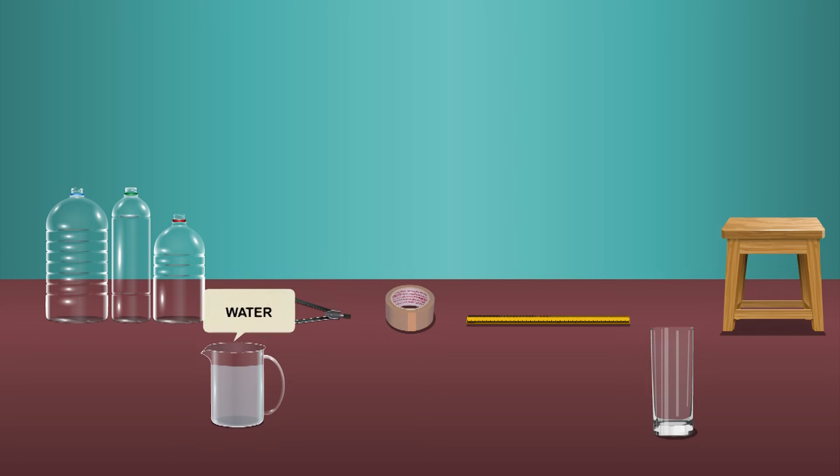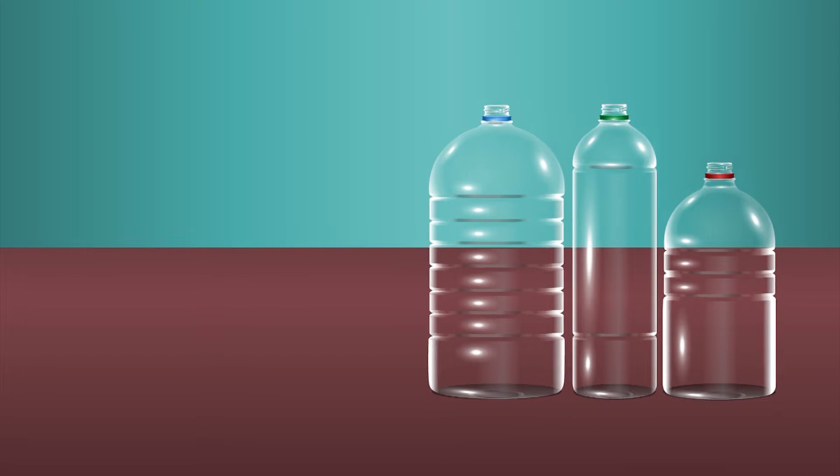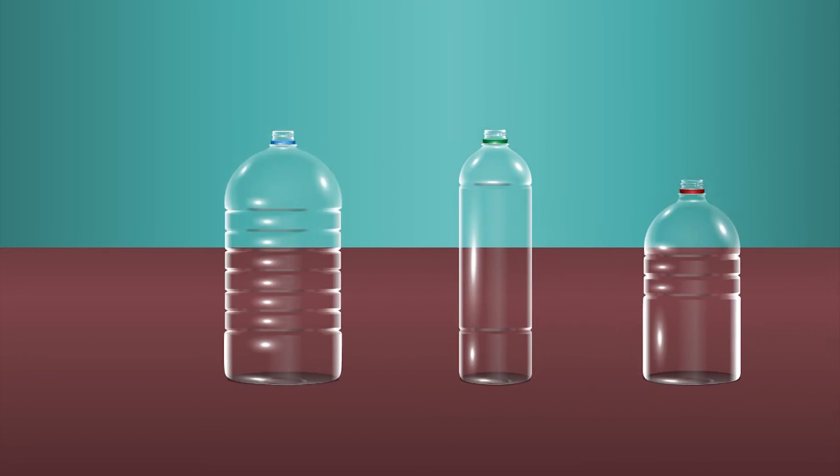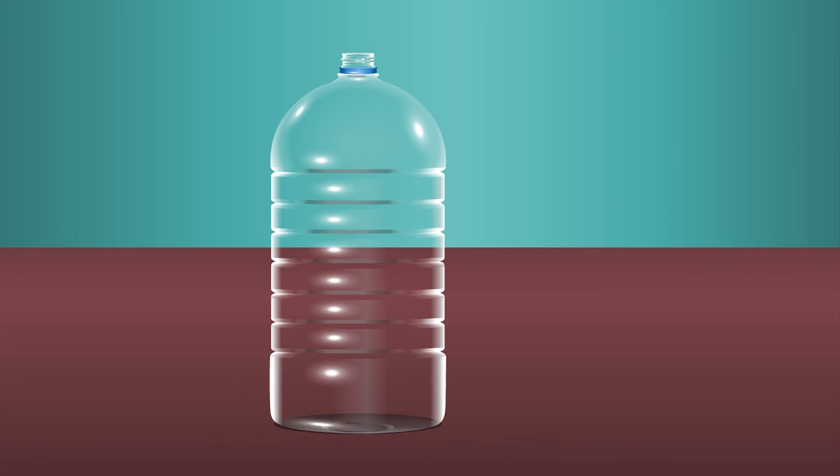Procedure: take three or four transparent plastic bottles of different capacities. Make one hole on the side of each bottle at the same distance from the base of the bottles.